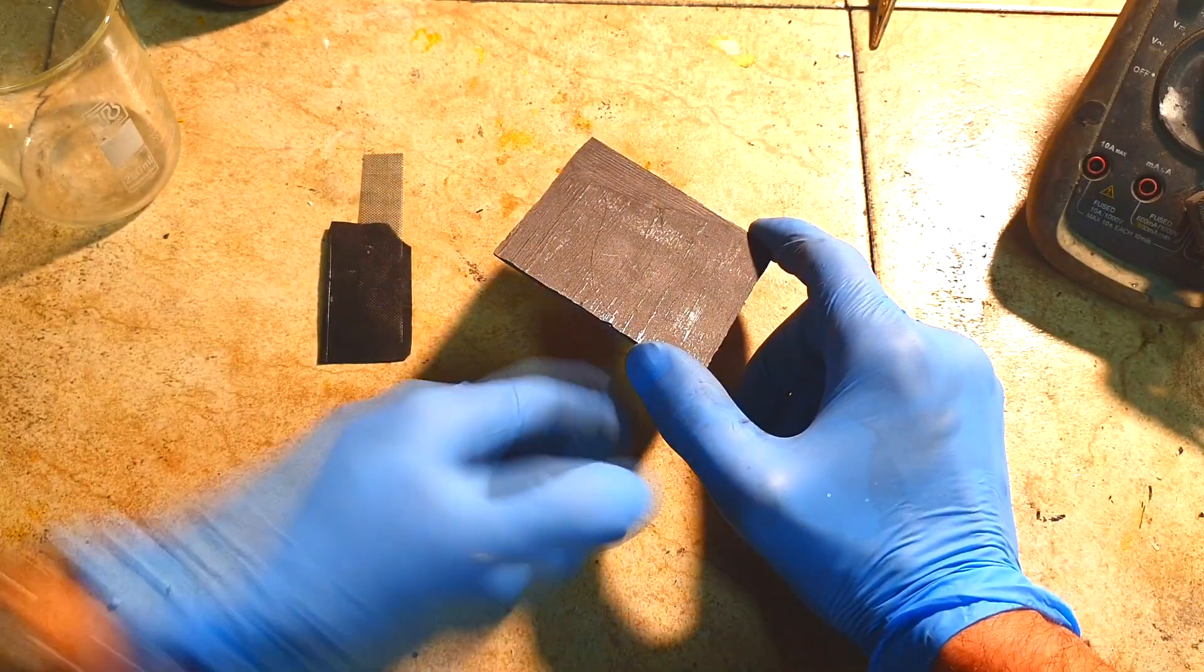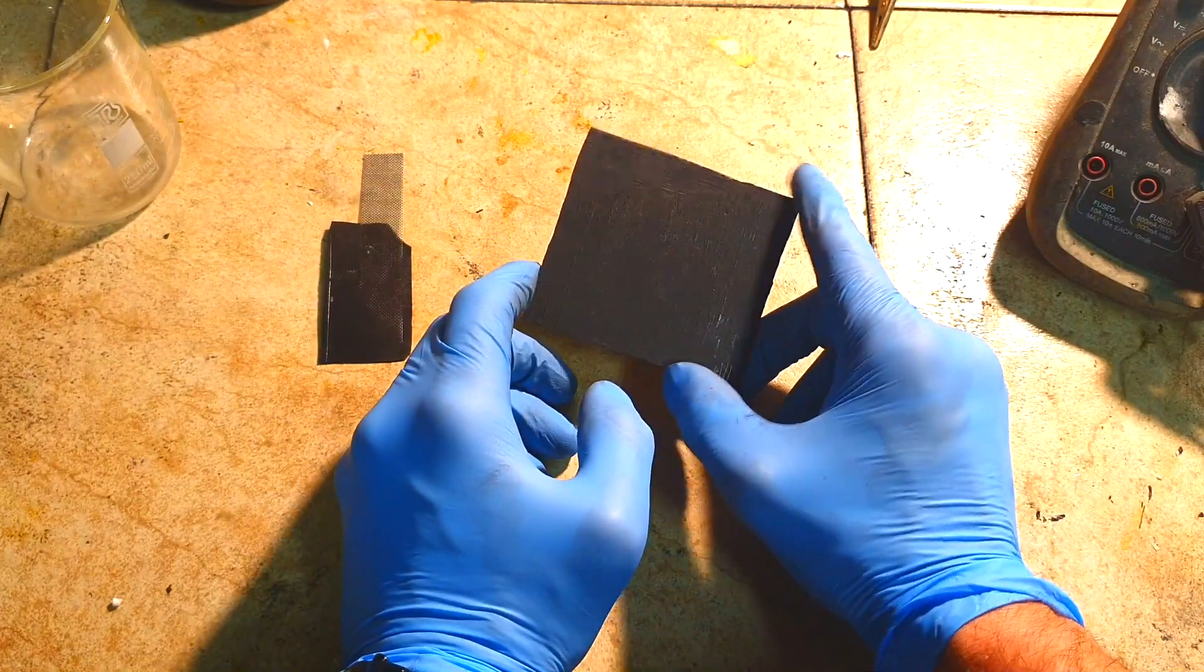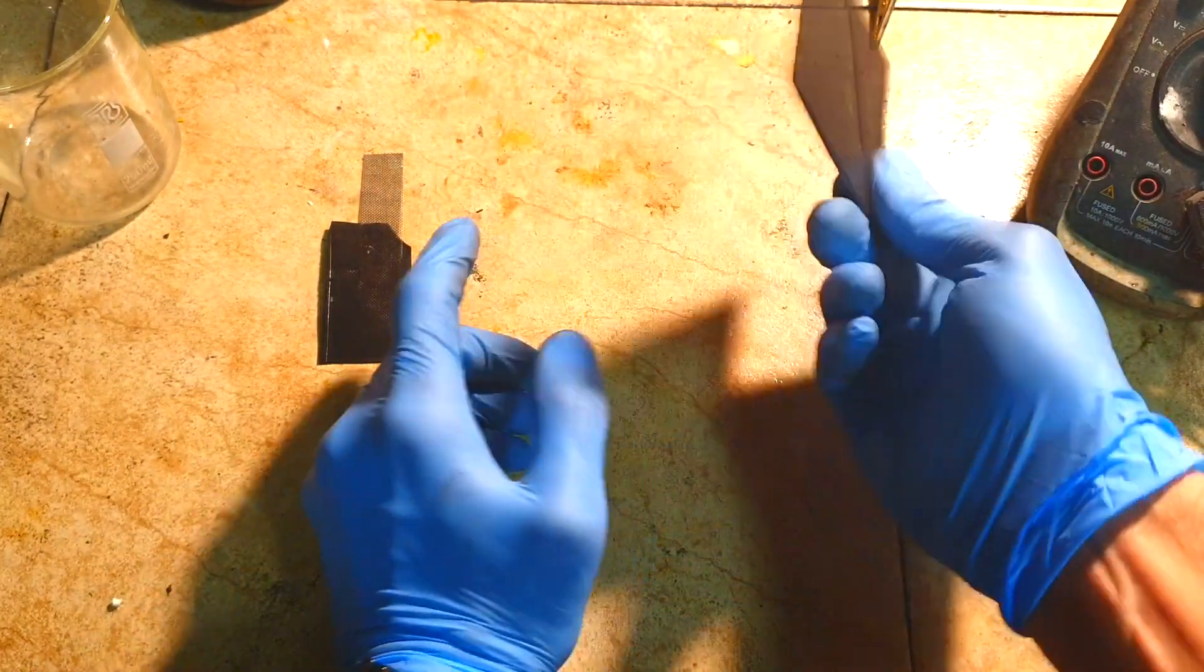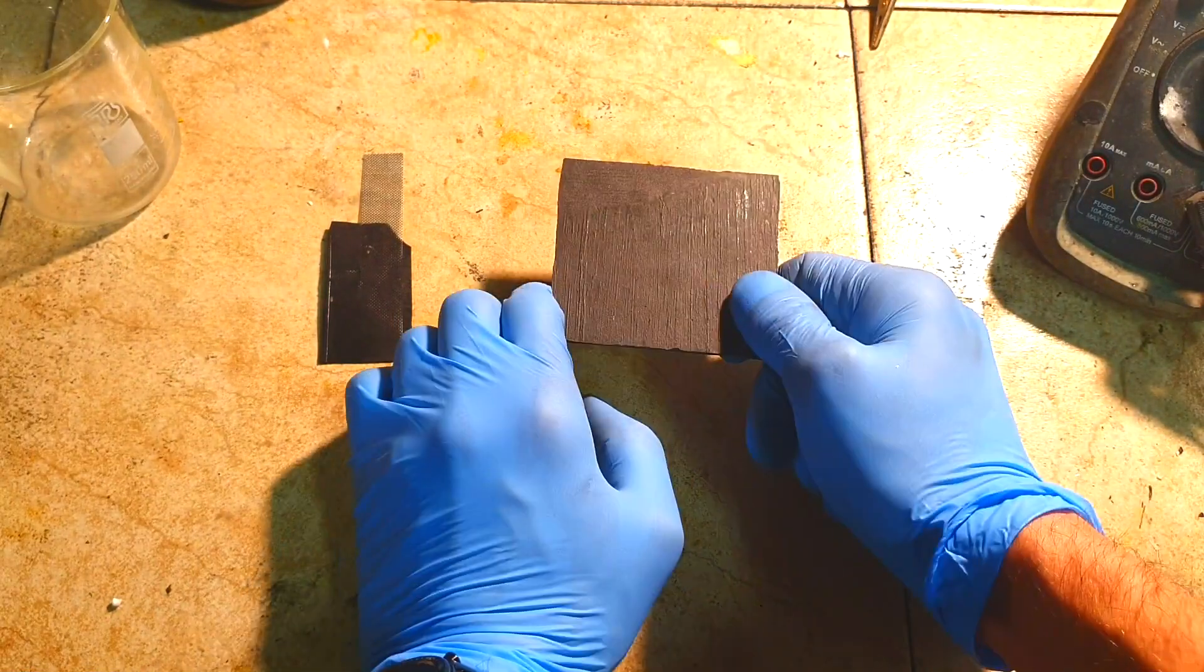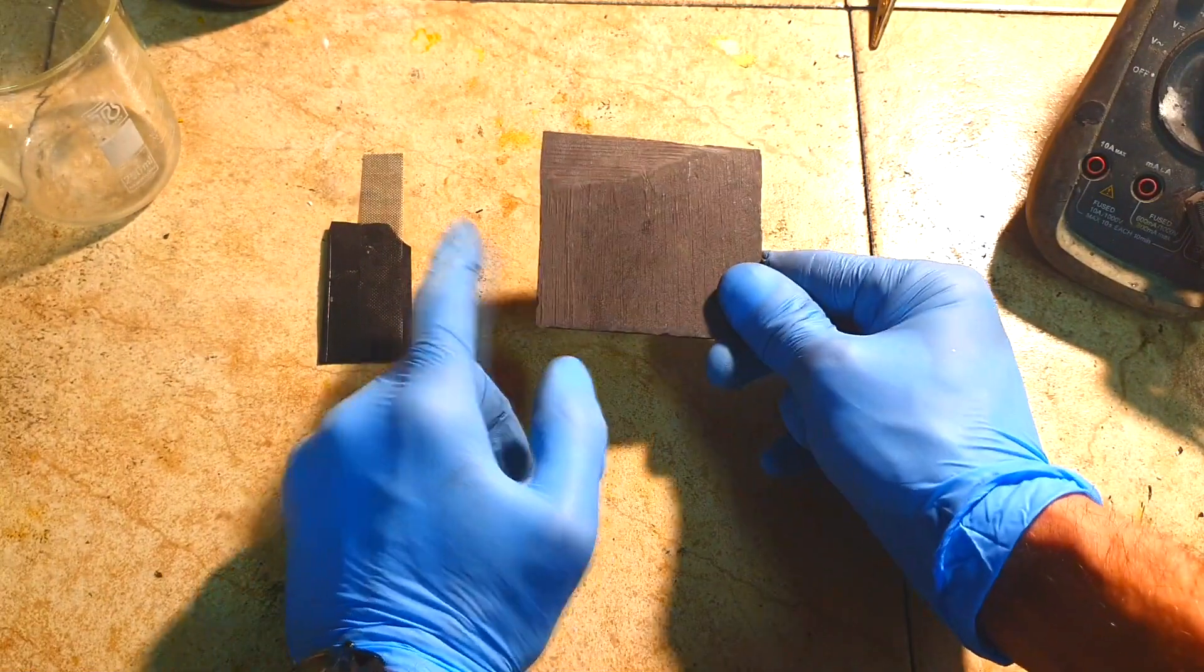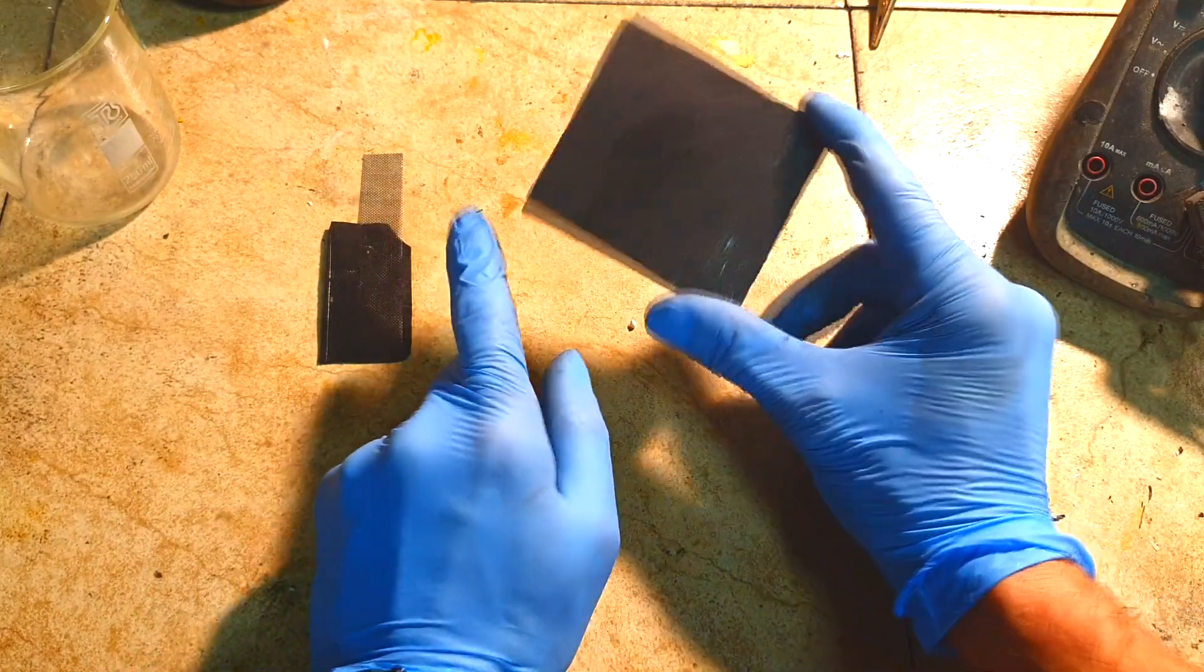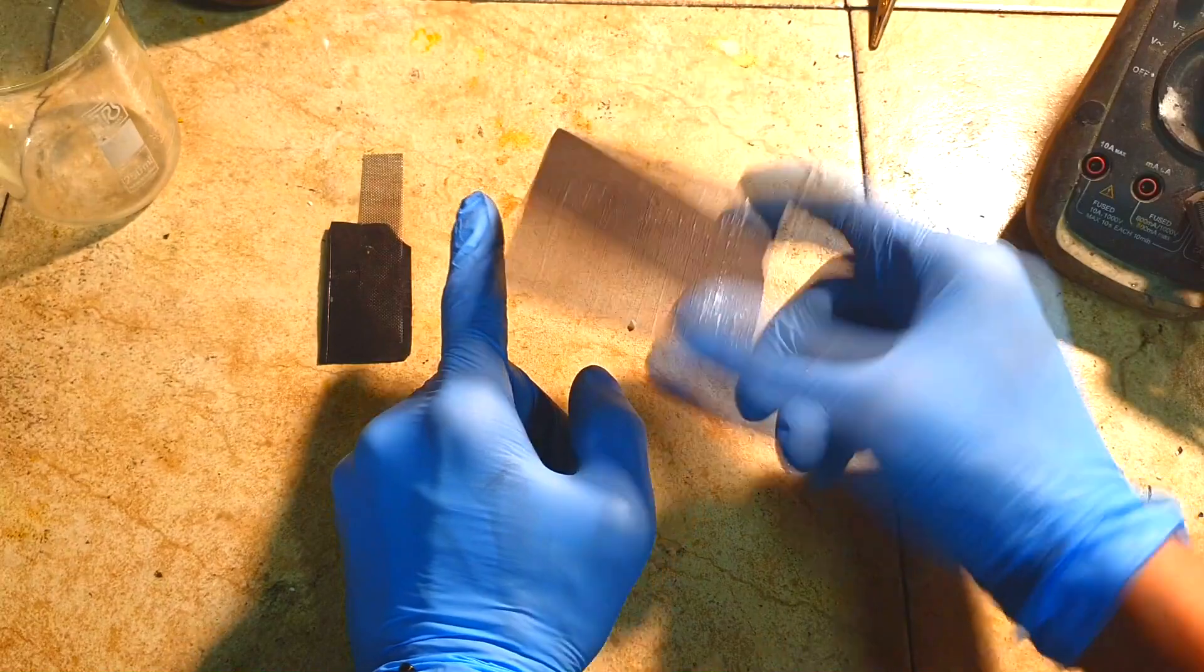You can also use this plastic in other applications, for example to make capacitive touch switches. What is really nice about this one is that if you don't like it, you can melt it down and reshape it.